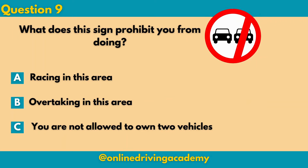Question 9: What does this sign prohibit you from doing? There are two vehicles in that sign and a red line going through one of the vehicles. So does this sign prohibit you from racing in this area, overtaking in this area, or you are not allowed to own two vehicles? The correct answer will be B: you are not allowed to overtake in the area where you see this sign.